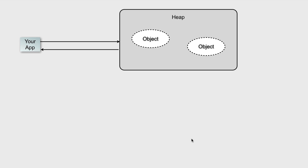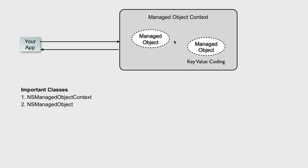Let's go back to basics. Your app handles objects, and objects live in RAM — more specifically, in a portion of the RAM called the heap. When you work with Core Data, you also work with objects in RAM. These objects are a little special, so they are not called simply objects — they are called managed objects. By default, they conform to Key Value Coding. The portion of the RAM where they live is called the managed object context.